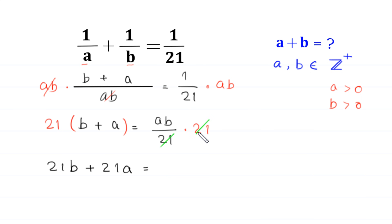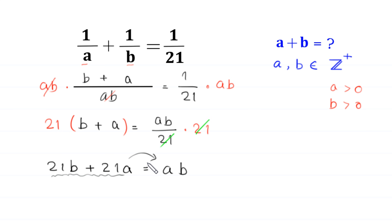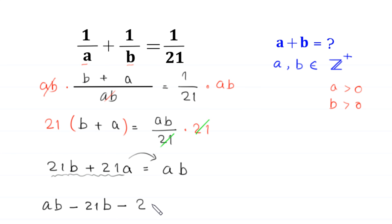On the right-hand side the 21 cancels and we are left with a times b. Now we move the two terms 21b plus 21a to the right-hand side, so this becomes a times b minus 21b minus 21a is equal to 0.